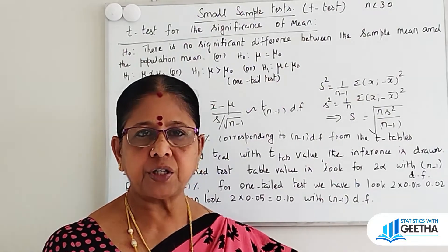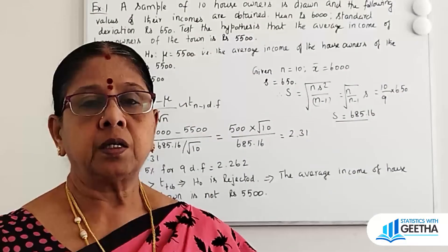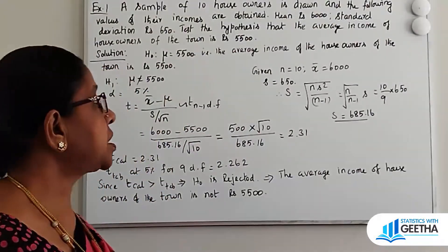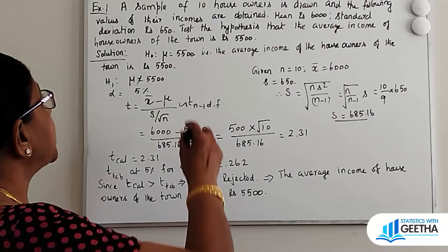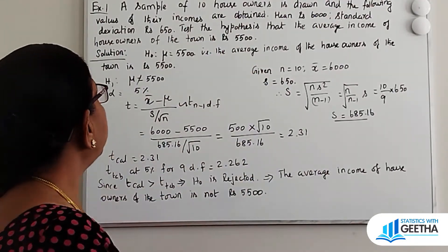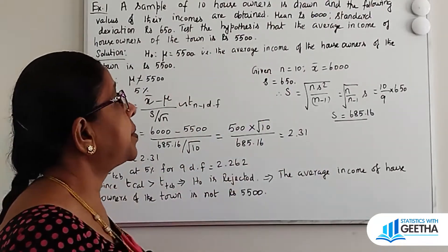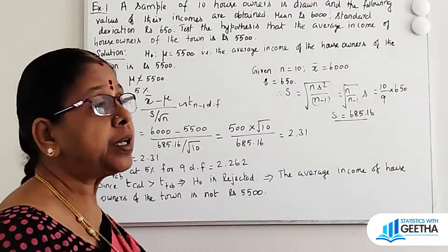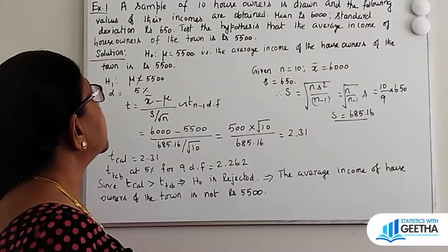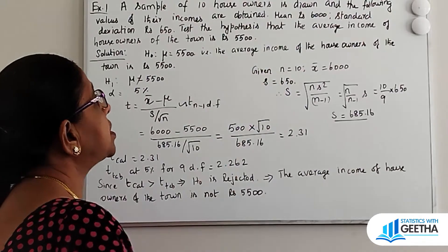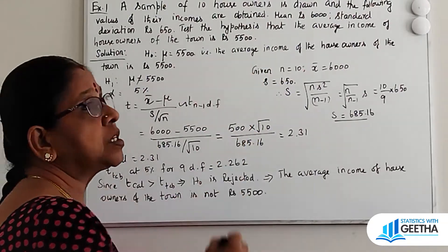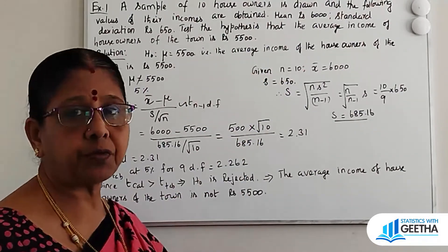Example 1: A sample of 10 house owners is drawn and the following values of their incomes are obtained. Mean = Rs. 6,000, standard deviation = Rs. 650. Test the hypothesis that the average income of house owners of the town is Rs. 5,500.